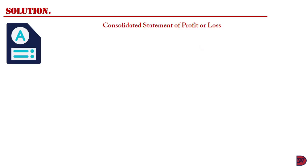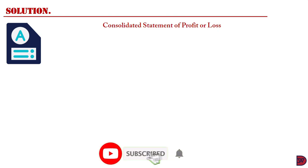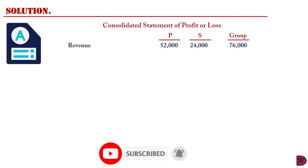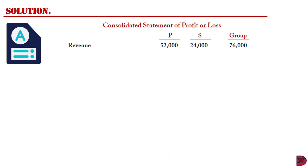In solution, when we start with the Consolidated Statement of Profit or Loss, we have the revenue of P at $52,000 plus the revenue of S at $24,000, giving a group revenue of $76,000. Moving on to cost of sales: $12,000 for P and $10,000 for S, giving $22,000 for the group.